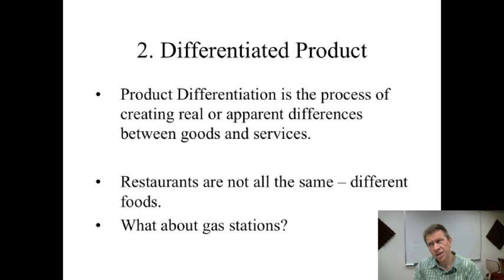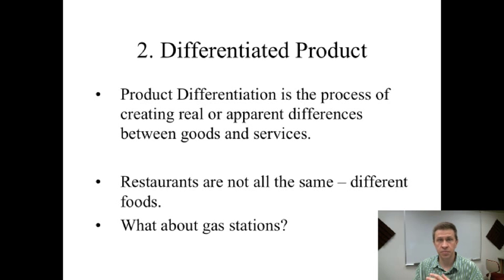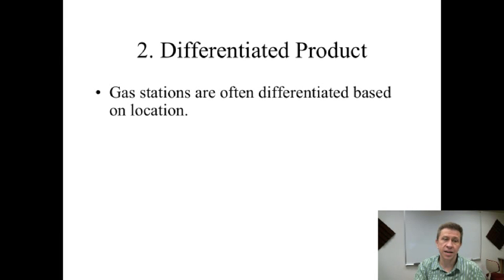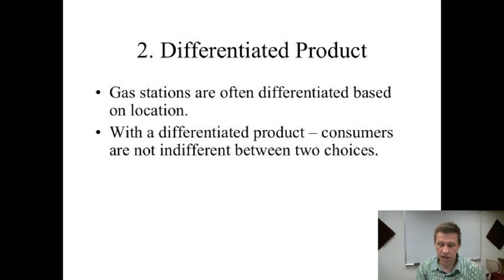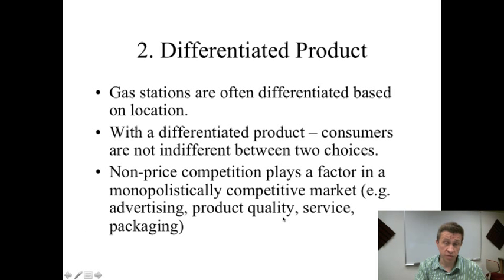Gas stations are another example. You might think gasoline is identical, but some stations try to sell their gas as better quality. And honestly, it doesn't even matter if it actually is better — as long as consumers believe it's better, some consumers will prefer one over another. Some gas stations market how good their food is; others differentiate on cleanliness. On long road trips, my wife tries to figure out which gas station will have the cleanest bathroom, and that's the one we get fuel at. Gas stations can also differentiate on location.